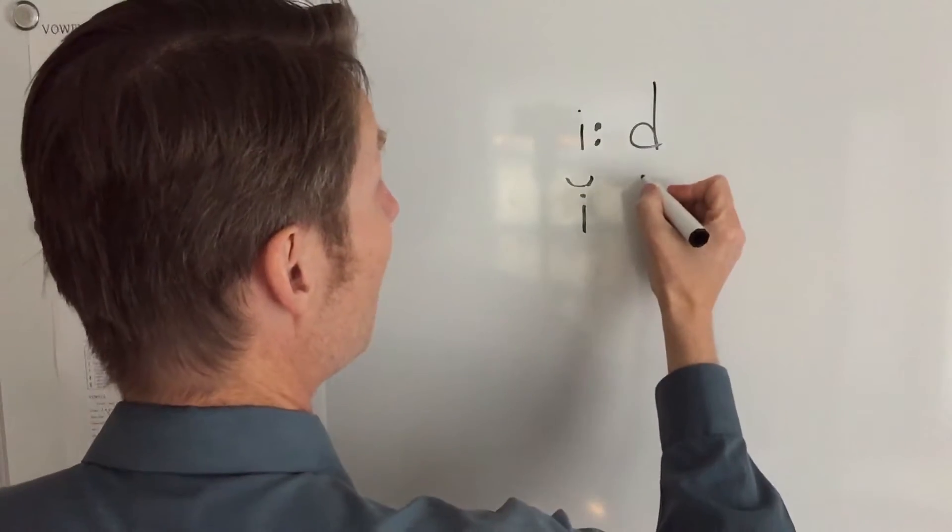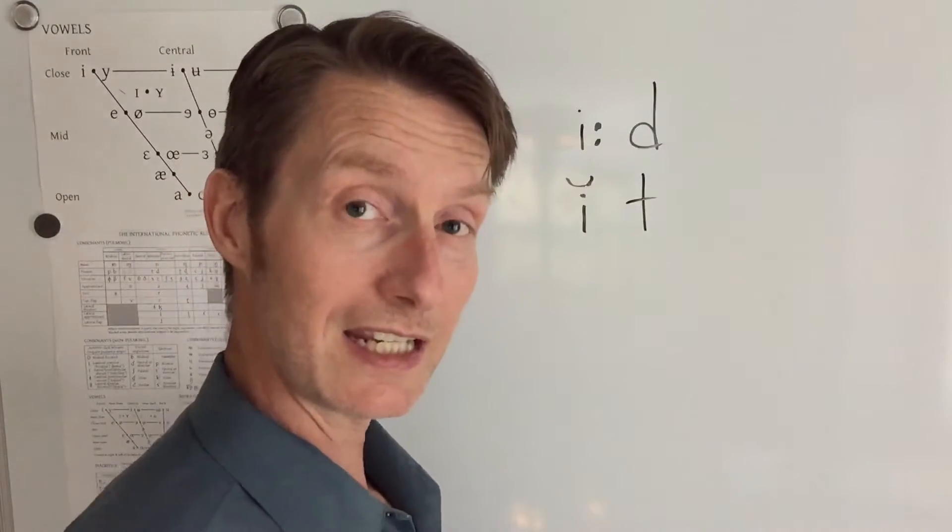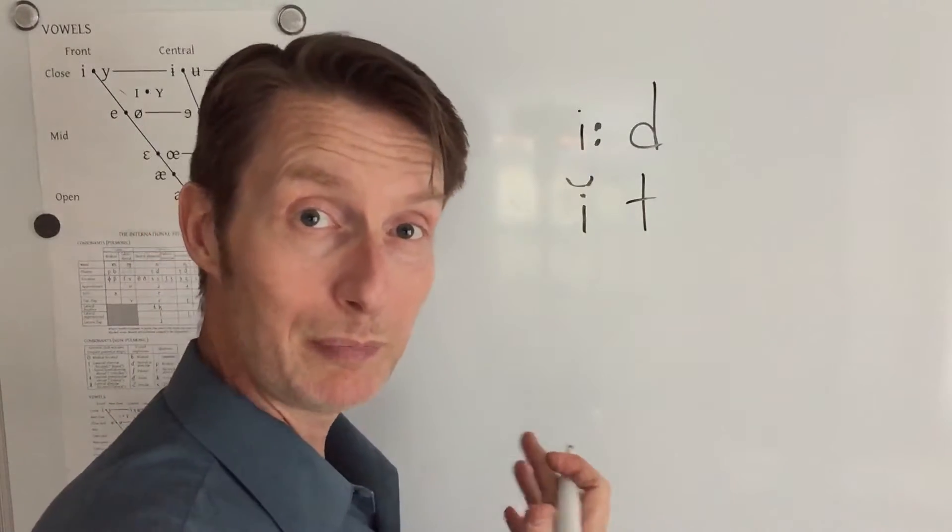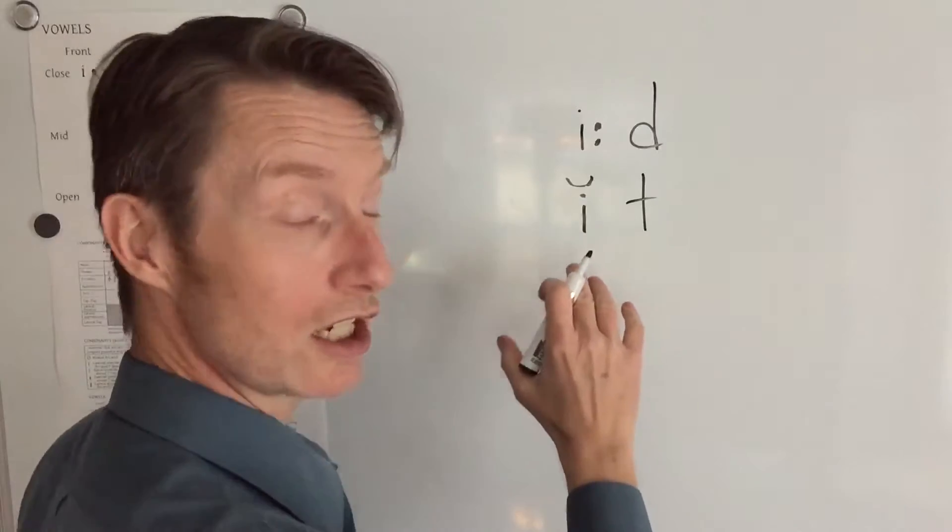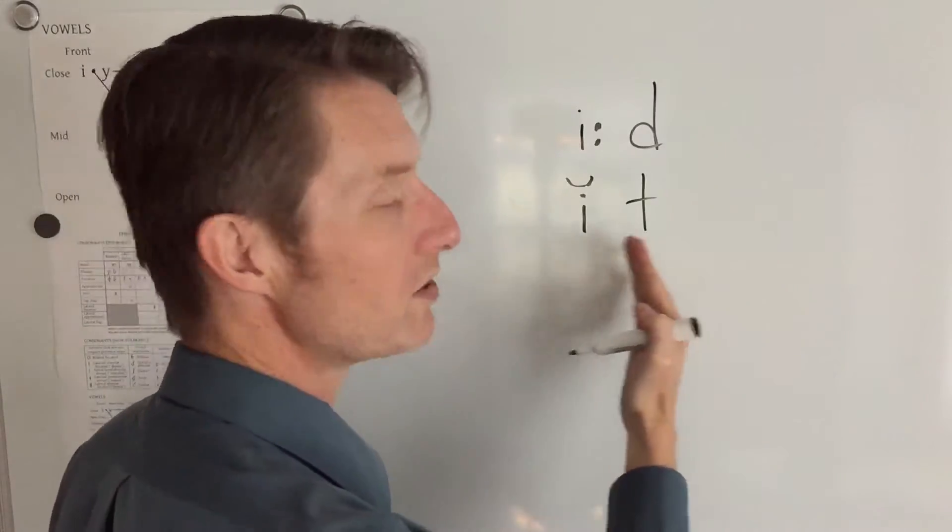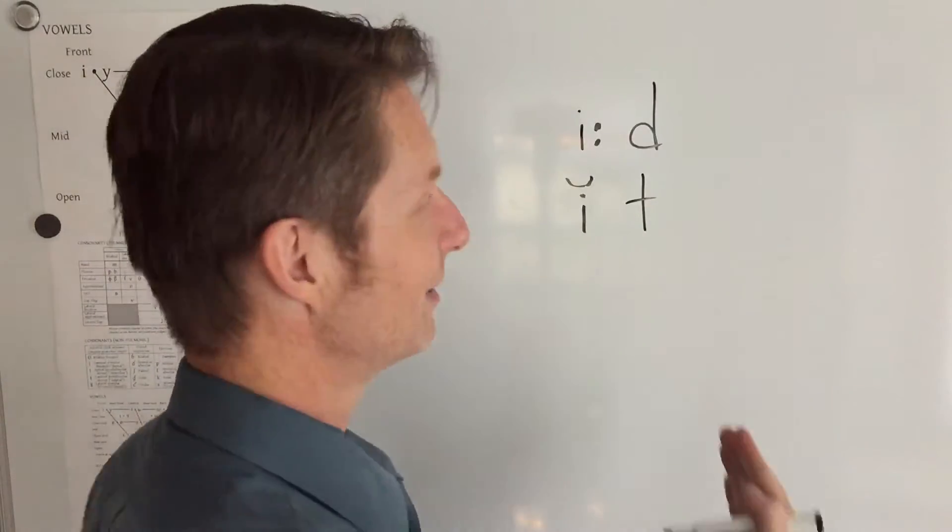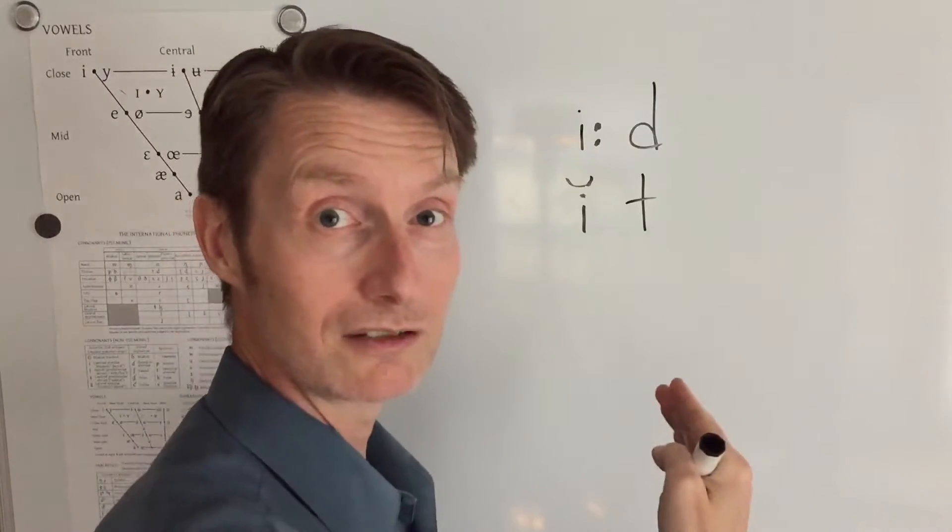If you have an unvoiced consonant after it, like a T, and you have a word like beat, it tends to be a shorter vowel because your voice is basically cutting off faster to try to be ready for not voicing.